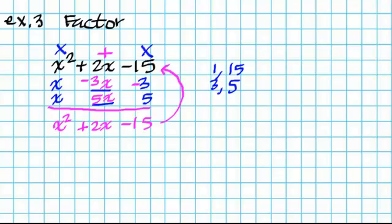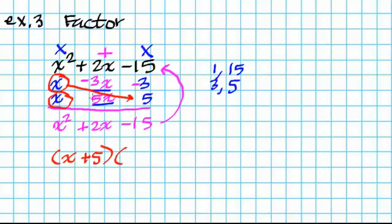So I can now write out my factors. I grab the top left x and bind it with the bottom 5 — since 5 is positive, I put x plus 5. Then I grab the bottom x and combine it with that top right number, which is negative 3 — so x minus 3. Our factors are x plus 5 times x minus 3.